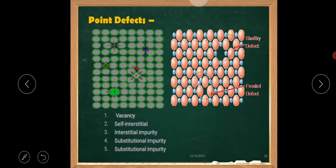These are point defects. That is vacancy, self-interstitial, interstitial impurity, substitutional impurity.